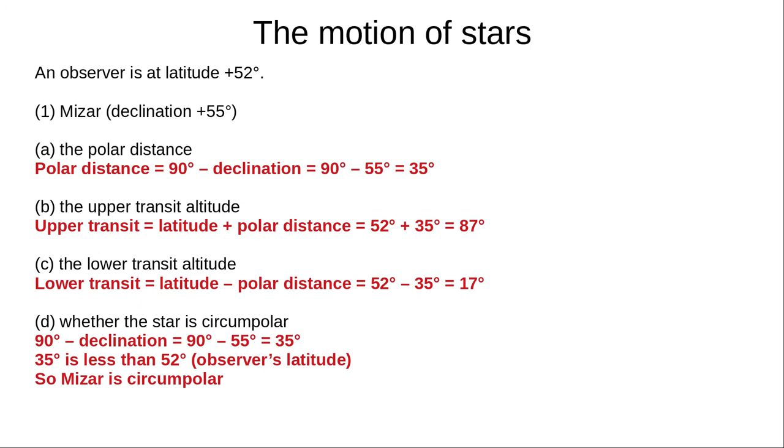For Mizar, polar distance is 90 degrees minus declination, or 90 degrees minus 55 degrees equals 35 degrees. Upper transit is latitude plus polar distance, 52 degrees plus 35 degrees equals 87 degrees. Lower transit is latitude minus polar distance, 52 degrees minus 35 degrees equals 17 degrees. And 90 degrees minus declination is 90 degrees minus 55 degrees equals 35 degrees. This is less than the observer's latitude of 52 degrees, so Mizar is circumpolar.